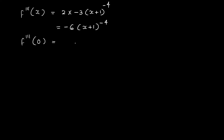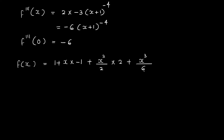So F'''(0) equals minus 6. Substituting into the Maclaurin series: F(x) equals 1 plus x over 1 factorial times minus 1, plus x squared over 2 factorial times 2, plus x cubed over 3 factorial times minus 6. The 2s cancel and the 6s cancel, giving: 1 minus x plus x squared minus x cubed.